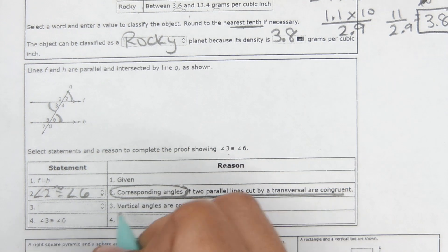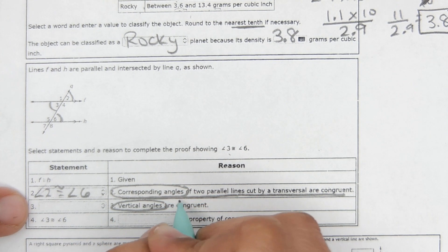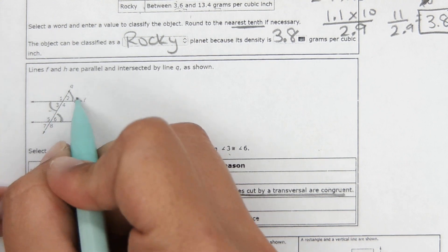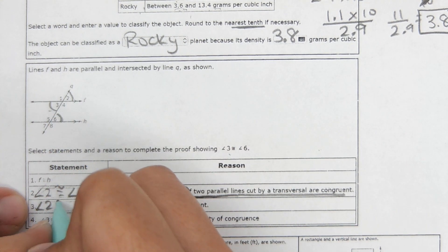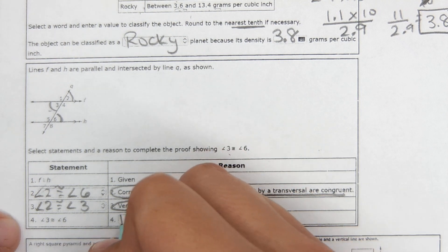The next reason says vertical angles are congruent. So again, you're just going to hit the dropdown and look for the angle pairs that are vertical angles, and it ends up being 2 and 3. So angle 2 is congruent to angle 3. And then the last thing, it says that 3 is equal to 6. Well, if 2 is equal to 6 and 2 is equal to 3, then 3 must be equal to 6. That is transitive property.